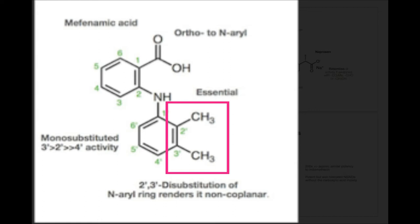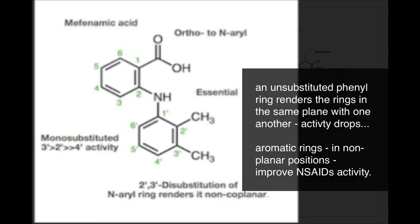The disubstitution makes it non-planar. If you take out these two substitutions, you just have a benzene ring — it'll be planar. If you add in the disubstitution, or even mono substitution, it'll be non-planar, and that helps in terms of activity. Remember, with arachidonic acid, they want to have more pi-pi interaction as well.